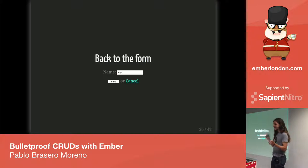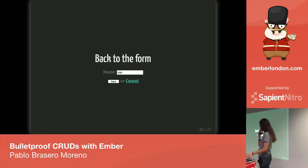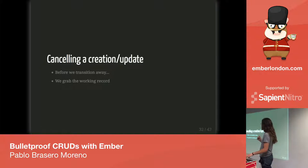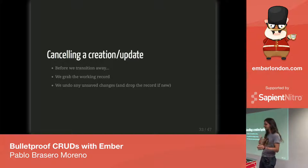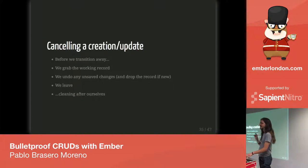The cancel action is the one that gave me trouble when I started all this, and it deserves looking at in more detail. When we are cancelling a creation or an update of a record and transitioning away, we should first grab the working record, then discard all the changes on it, and if it's a newly created record we should also remove it from the store. Then we can finally leave, making sure we have cleaned up after ourselves.